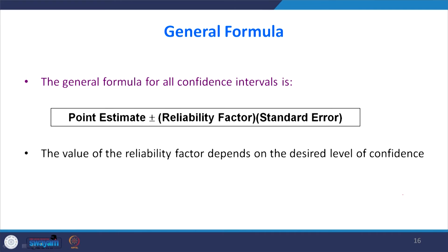The general formula for a confidence interval is: point estimate plus or minus a reliability factor times the standard error. Specifically, x̄ ± z(σ/√n), where σ/√n is the standard error and z is the reliability factor. The plus gives the upper limit and the minus gives the lower limit. The value of z depends upon the desired confidence level.